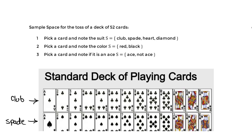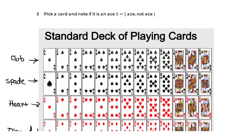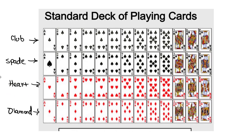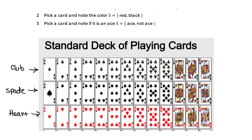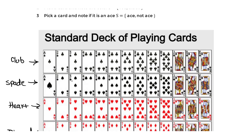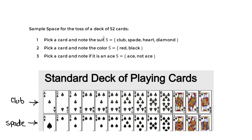We can also define a sample space by picking a card based on color — it can be red or black. The hearts and diamonds are red; the clubs and spades are black. That's another sample space. Or we can pick based on whether we draw an ace or not draw an ace — that's yet another sample space.